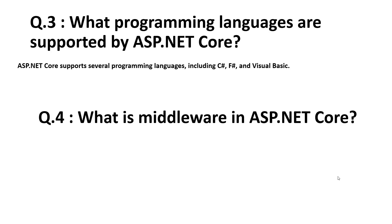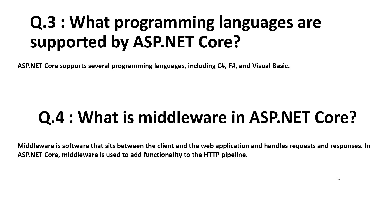The fourth question is: what is middleware in ASP.NET Core? Middleware is software that sits between the client and the web application and handles requests and responses. In ASP.NET Core, middleware is used to add functionality to the HTTP pipeline — the request and response pipeline.